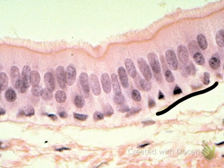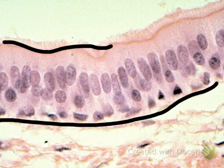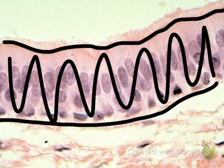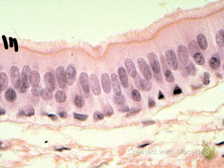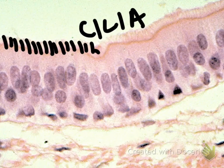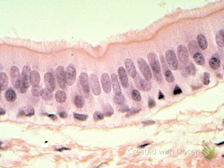Here's your basement membrane and here is your apical surface, which means this is your epithelial tissue and this is your connective tissue underneath. Near the apical surface, notice the hair-like structures — these are your cilia. As soon as you see cilia, you should think pseudostratified columnar epithelium. It doesn't mean that other cell types don't have cilia; it's just that the only ones I'm going to show you will be pseudostratified columnar epithelium.